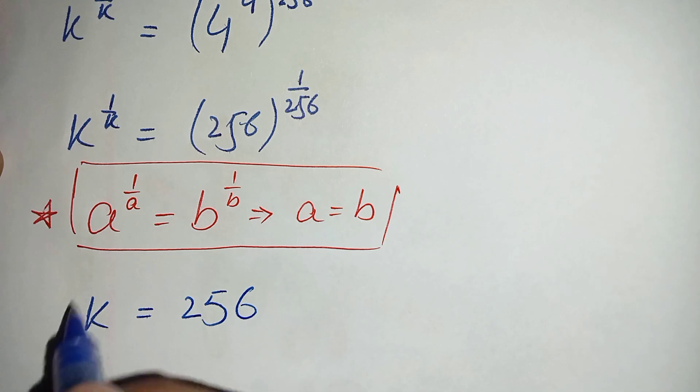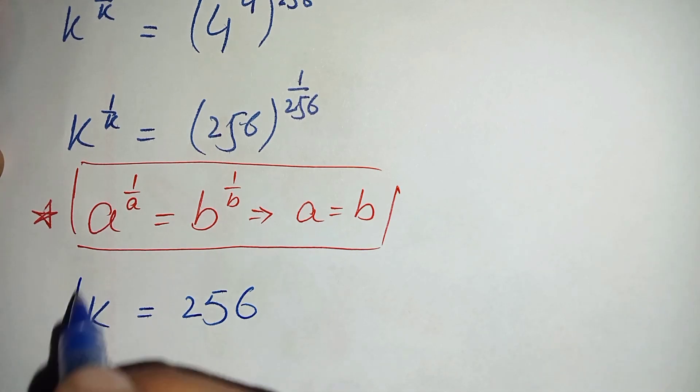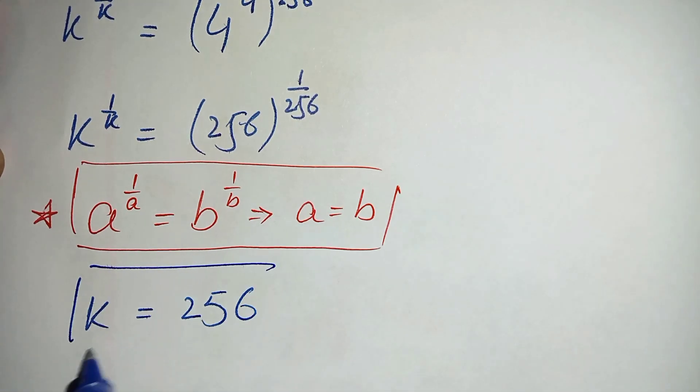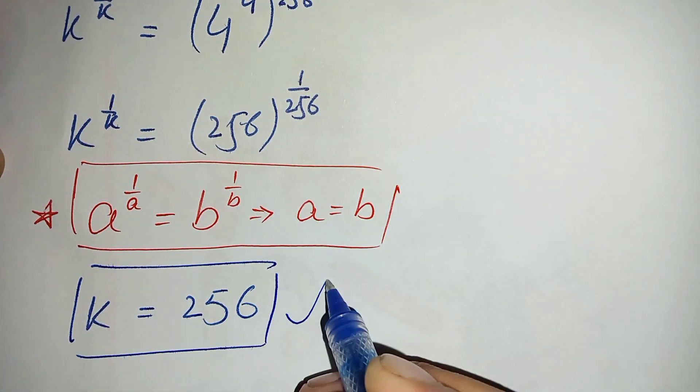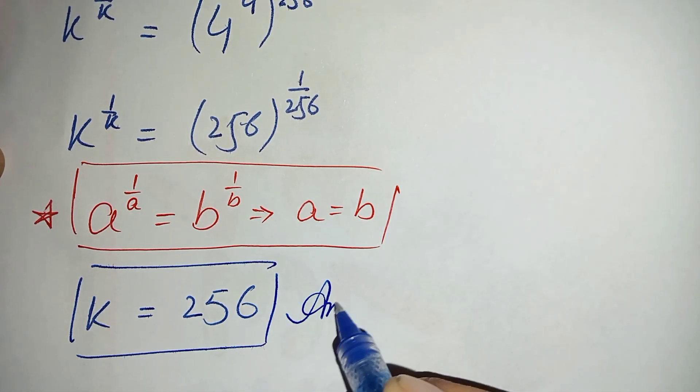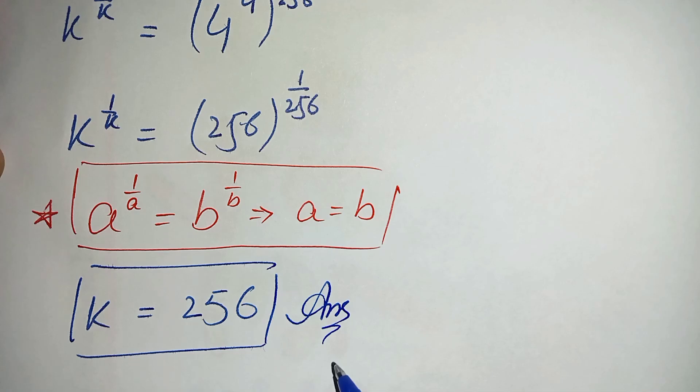So we compare the bases and get k equal to 256. This is our answer — the required value of k in this nice and interesting exponential math problem.